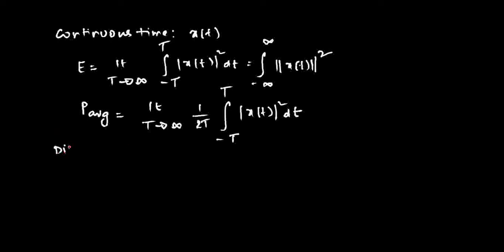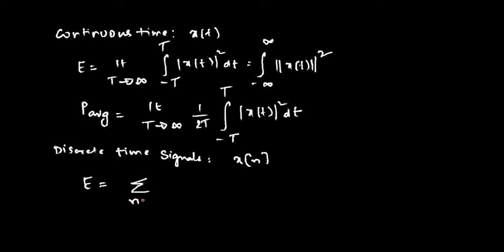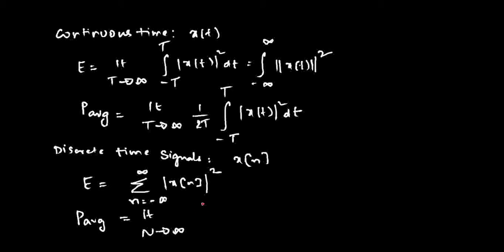For discrete time signals, the energy can be mathematically computed as the sum from n = −∞ to +∞ of |x[n]|². The average power of the discrete time signal is obtained as the limit as N tends to infinity of (1/(2N+1)) times the sum from n = −N to +N of |x[n]|².